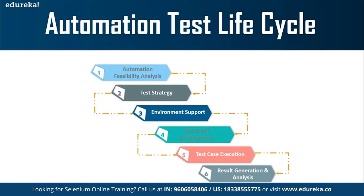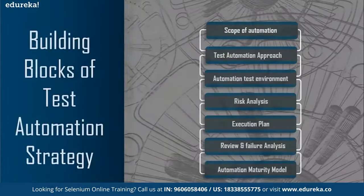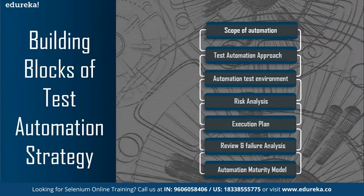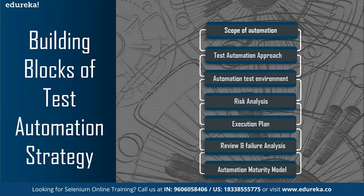Now that we are aware of the automation test life cycle, let's look at the building blocks of test automation strategy. It consists of eight items to consider as you head out on your automation journey: scope of automation, test automation approach, automation test environment, risk analysis, execution plan, review and failure analysis, and automation maturity model. Note that these blocks are not listed in any particular order.